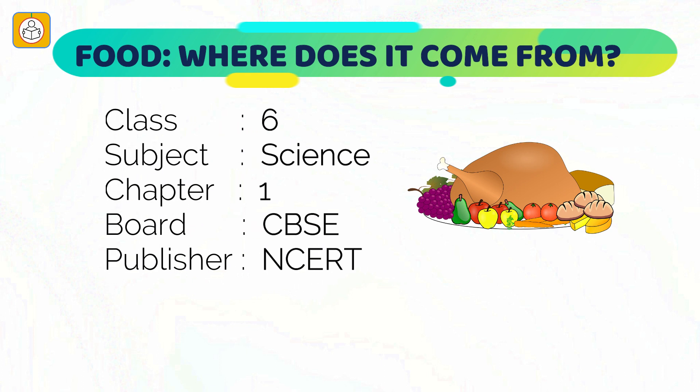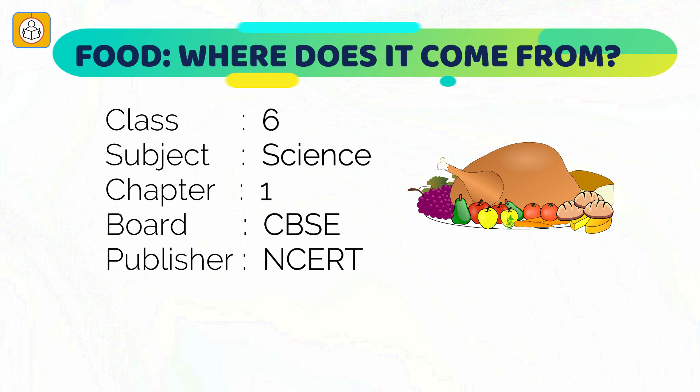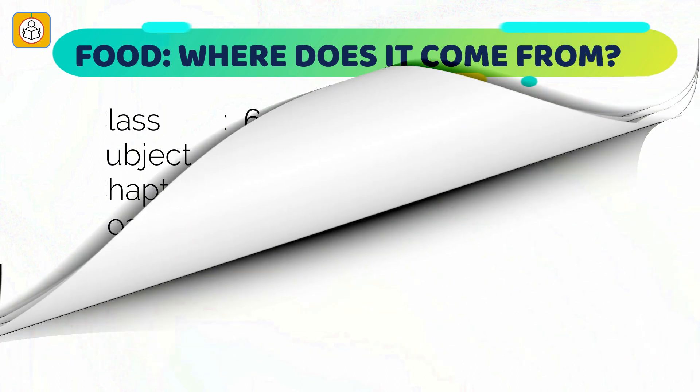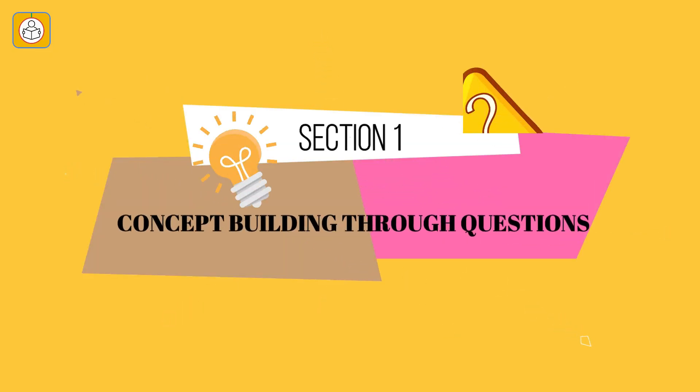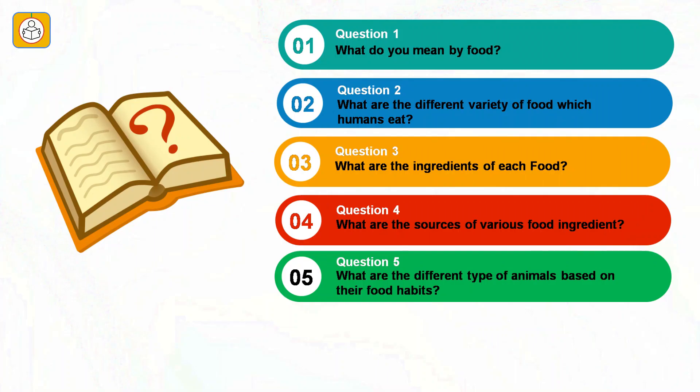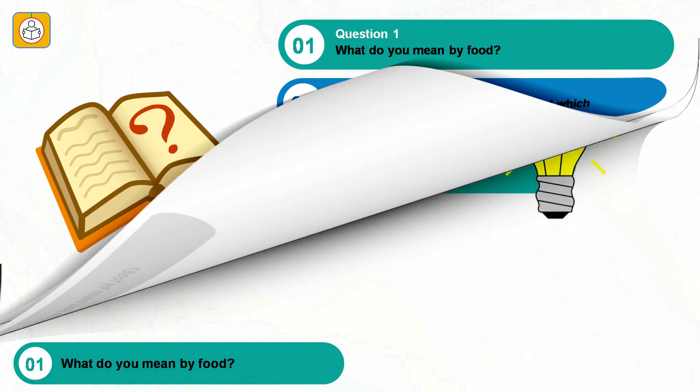Hello friends! Welcome to Qasim's laboratory. This video will cover the first chapter of class 6 science NCERT textbook. The chapter is 'Food: Where Does It Come From?' This chapter has been divided into five questions, starting from the very basic question of what food means, to the last question that talks about the different types of animals based on their food habits. So let's begin.